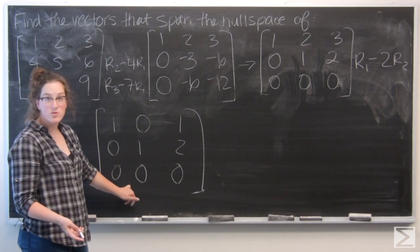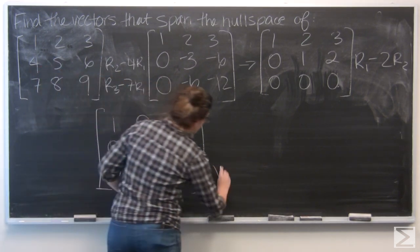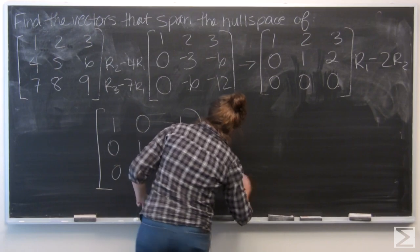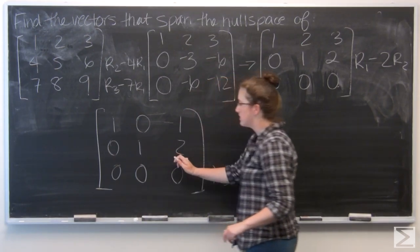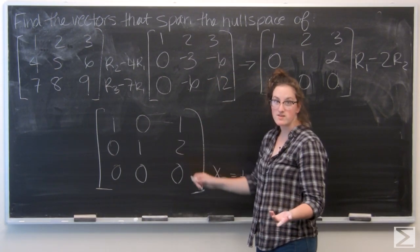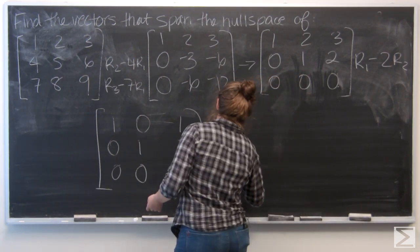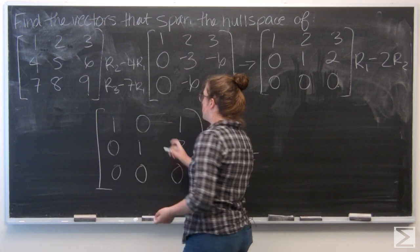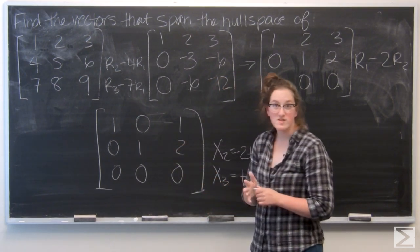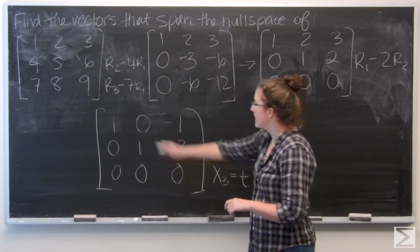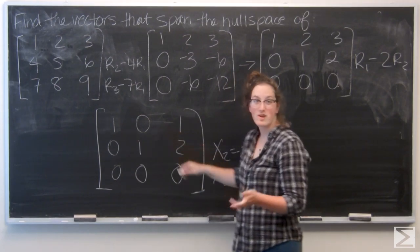So x3 is going to be a free variable. I'm going to call it t. And then x2 plus 2t equals 0, x2 equals negative 2t. And for the top I have x1 minus t equals 0, so x1 equals t.